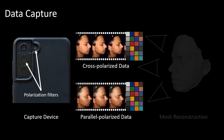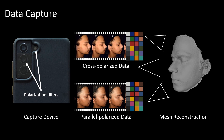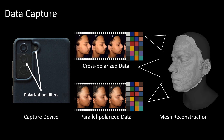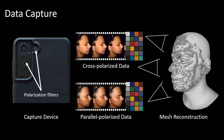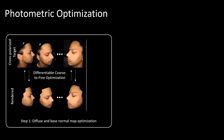Using structure from motion, we estimate the coarse geometry of the subject, to which we then non-rigidly fit the FLAME face model. Based on this data and leveraging the fact that the light source is co-located with the camera, we optimize high-resolution diffuse, specular, and normal maps.